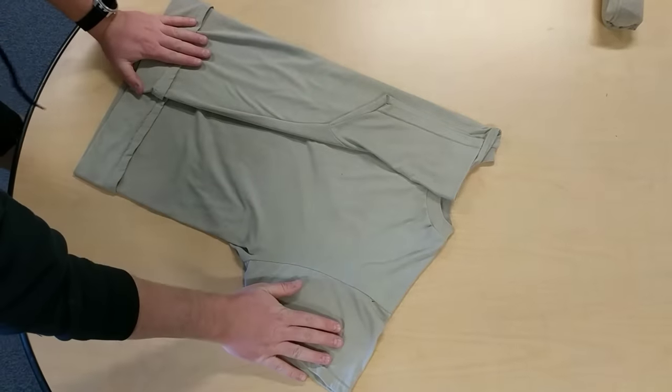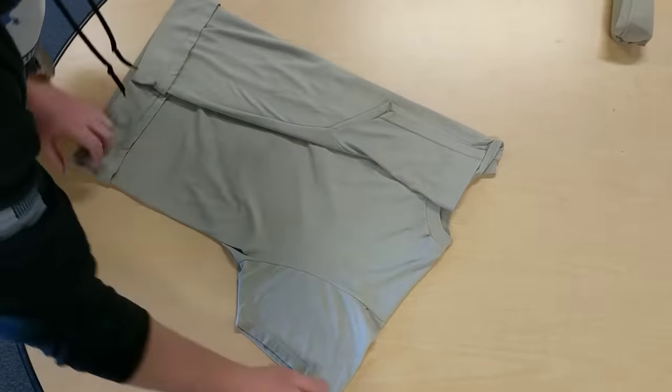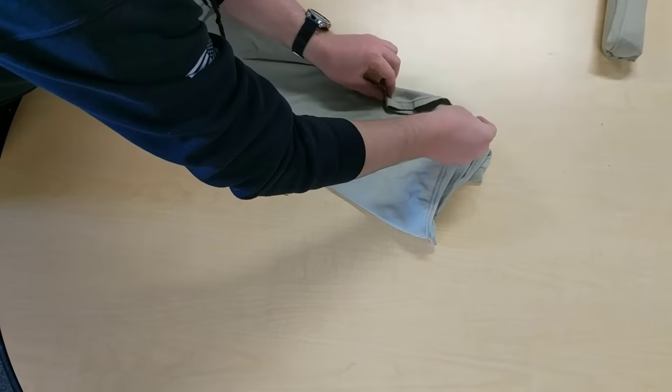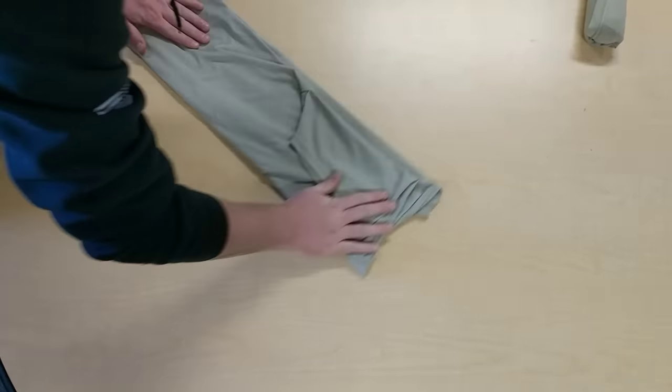Now you're going to do the same thing, but with the right side of the shirt. And this one, you're going to fold on top of the left fold. So, up and over. Take the sleeve and fold it back on itself. Same thing you did on the step before.